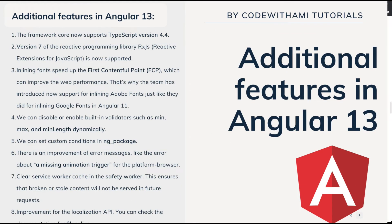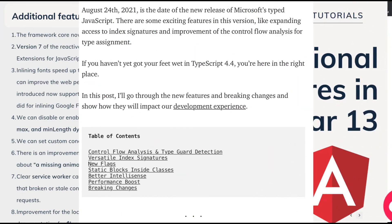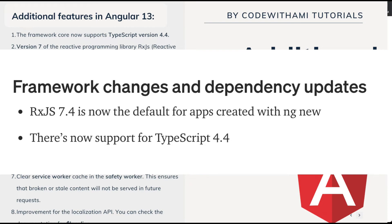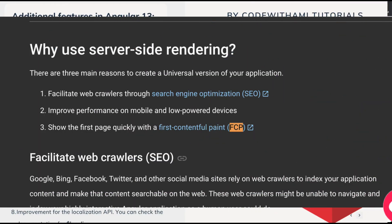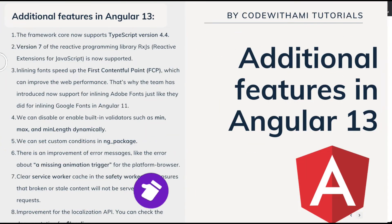There are a few additional changes in the framework. Angular 13 now supports TypeScript 4.4, so you can use all TypeScript 4.4 features in your Angular application. It also ships with RxJS 7, which adds many new features to the RxJS library. Additionally, inline Adobe Fonts support has been added to speed up the First Contentful Paint (FCP) and improve web performance, similar to how inlining Google Fonts was introduced in Angular 11.